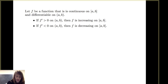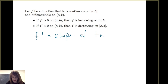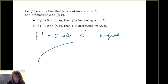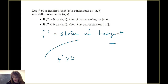What does this mean? The derivative can be interpreted as the slope of the tangent line to the curve at a particular x value. So if the slopes are positive for every value on an interval, then that function must be increasing. Similarly, if the slopes are negative, then the function is decreasing.